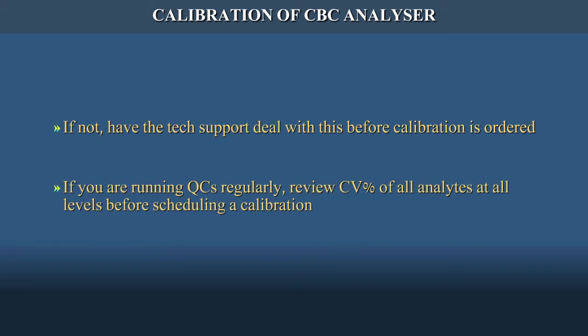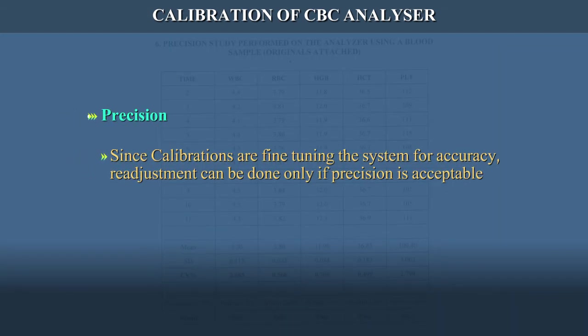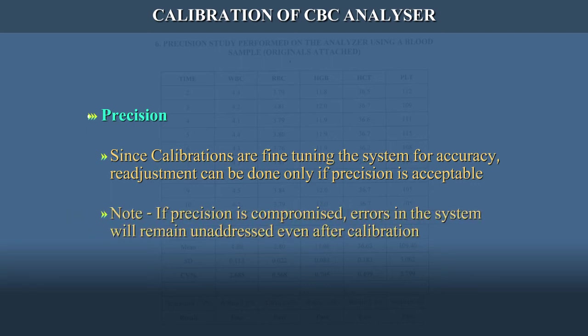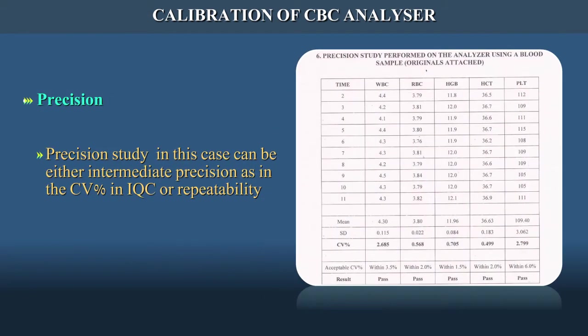If you are running QCs regularly, review CV percentage of all analytes at all levels before scheduling a calibration. Since calibrations are fine-tuning the system for accuracy, readjustment can be done only if precision is acceptable. Note: if precision is compromised, errors in the system will remain unaddressed even after calibration. Precision study can either be intermediate precision as in CV% in IQC, or repeatability.